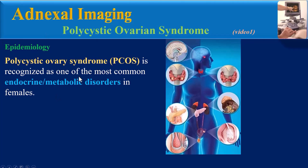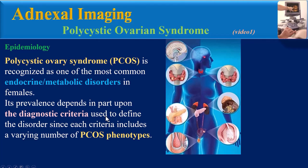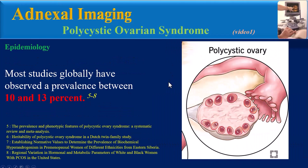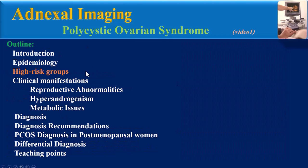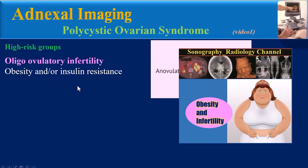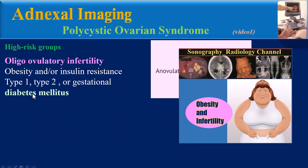Epidemiology: Polycystic ovary syndrome is recognized as one of the most common endocrine metabolic disorders in females. Its prevalence depends in part upon the diagnostic criteria used to define the disorder, since each criteria includes a varying number of PCOS phenotypes. Most studies globally have observed a prevalence between 10 and 14 percent.